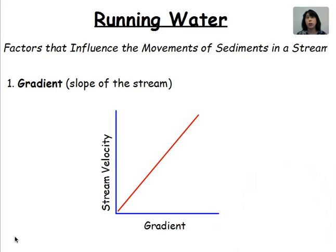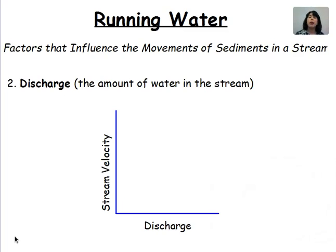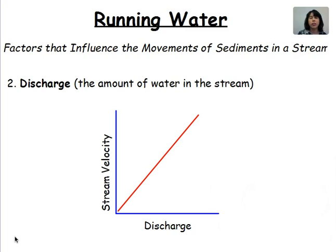If we slow down that velocity or have a more gentle slope giving us slower velocity, you would actually deposit more sediments — keep that in mind. Another factor is the amount of discharge, or the volume of water in the stream. We can increase discharge by increasing the amount of precipitation or snowmelt. If we increase the amount of discharge in the stream, we also increase stream velocity, and as stated earlier, if you increase stream velocity, you can increase the amount of erosion. So more discharge means more erosion due to greater velocity.